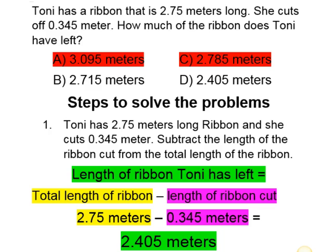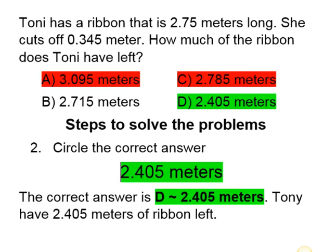To solve the problem and find the length of ribbon Toni has left, we take the total length she started with and subtract the length she cut: 2.75 meters minus 0.345 meters, which equals 2.405 meters. Step two: circle the correct answer. The correct answer is D, 2.405 meters — that's how much ribbon Toni has left.